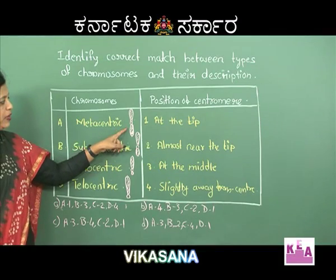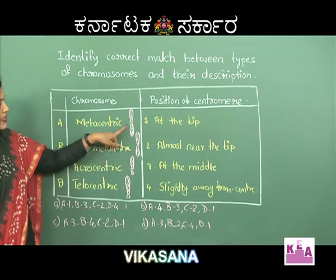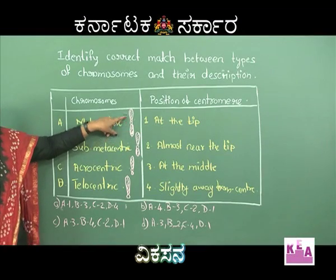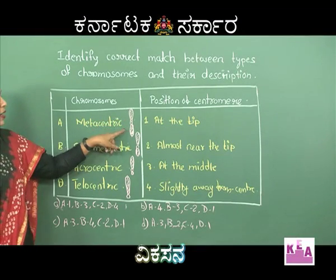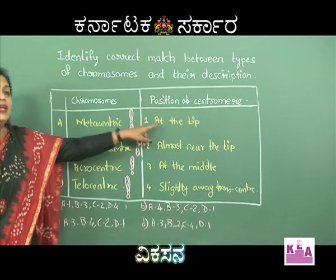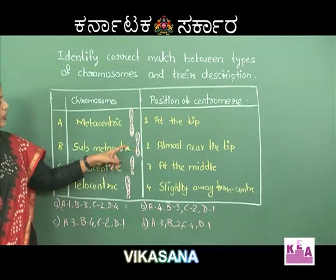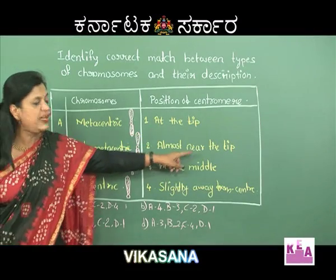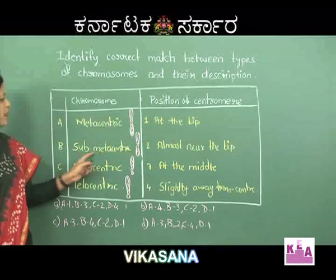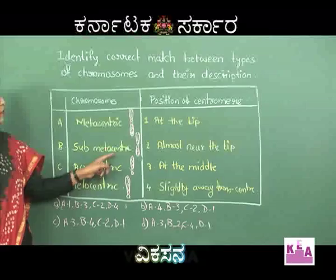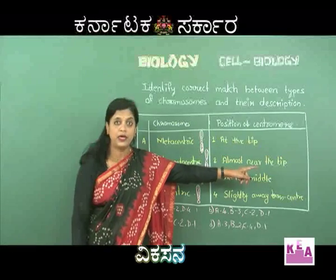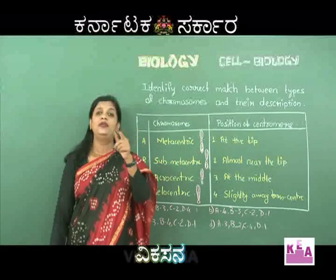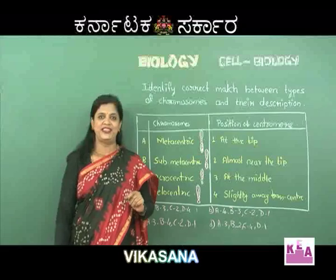If you have learned this, you will know that metacentric means centrally located - the centromere gives equal chromatid arms. The third option says almost near the tip. Sub-metacentric chromosome is not almost near the tip - almost near the tip is acrocentric. So that is also wrong.